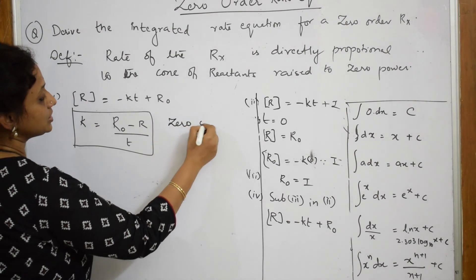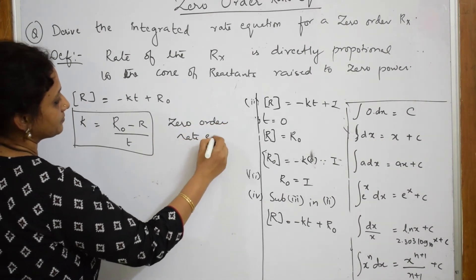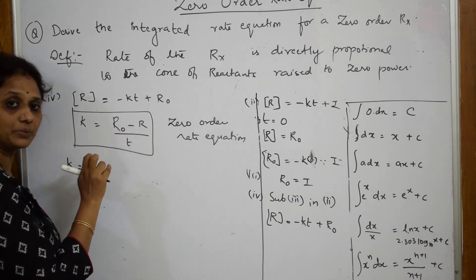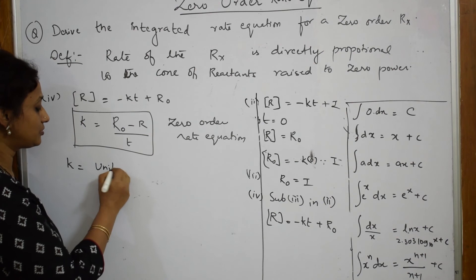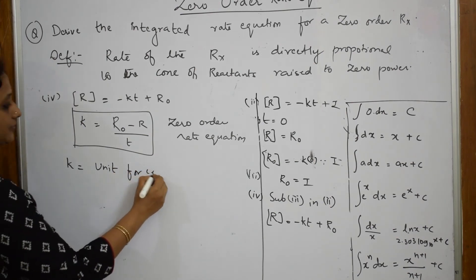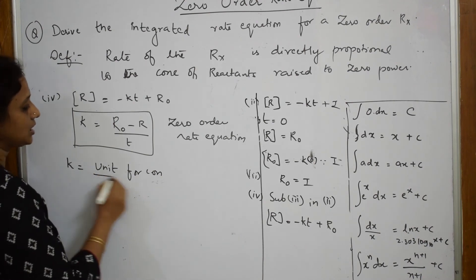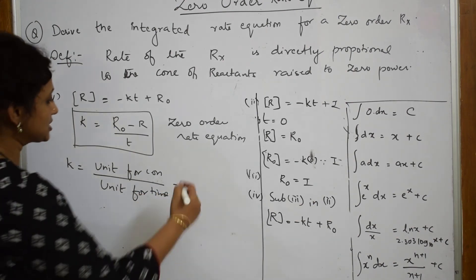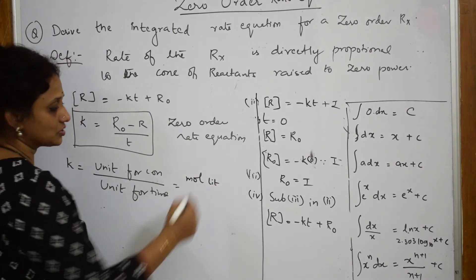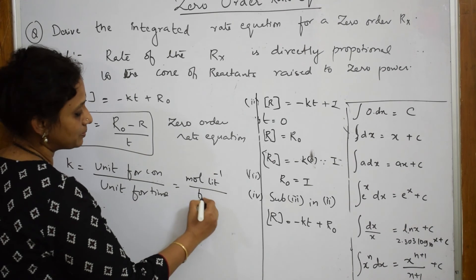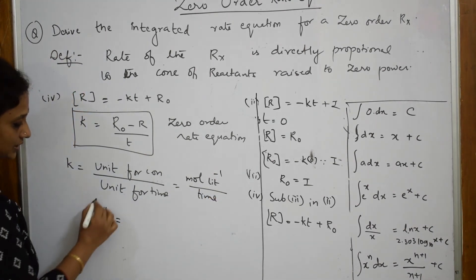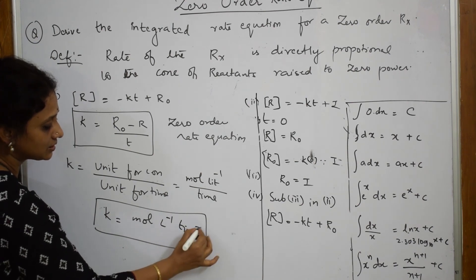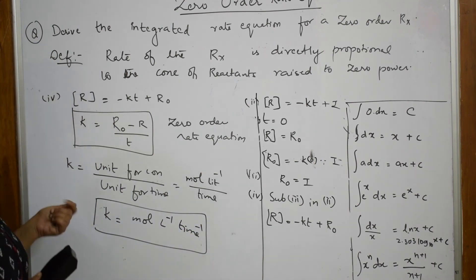Now let us determine the units. [R]₀ minus [R] is change in concentration, so the unit is moles per liter. Dividing by time gives moles per liter per second. Therefore, the unit for the zero order rate constant k is mol L⁻¹ s⁻¹ — that is mole liter inverse time inverse.